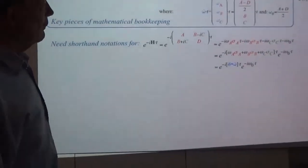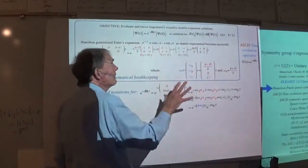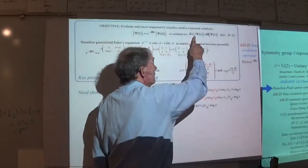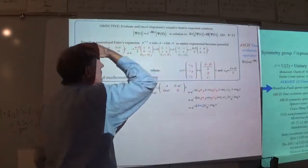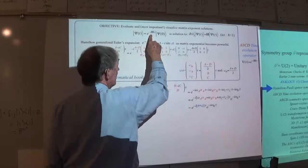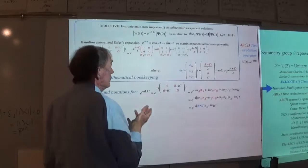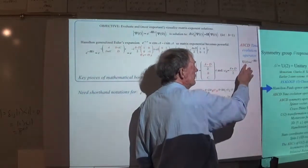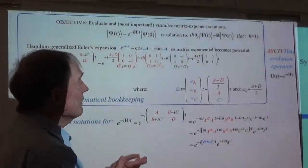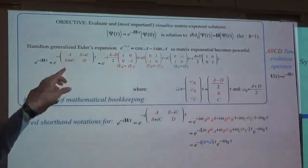So let's see what we really have to do to do quantum mechanics. We have to be able to evaluate, solve, and most importantly visualize all the sorts of motion you can get from a matrix exponent solution. That is, the first-order derivative of this equals a constant times the dependent variable, which means the dependent variable is going to be an exponential with that as an exponent. So I've got minus iH times time — this is the operator that drives it through time, and this only works for H equal to constant.